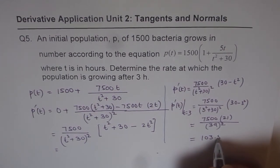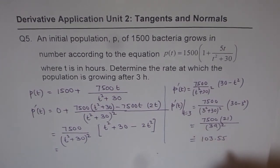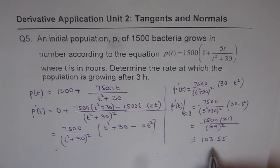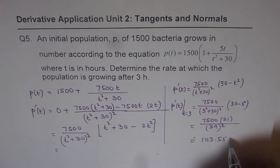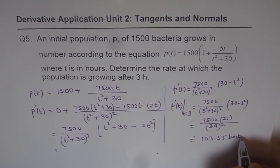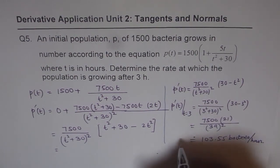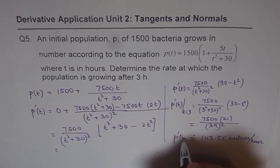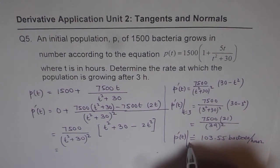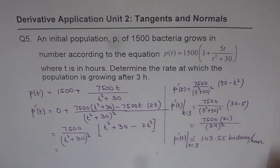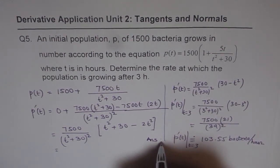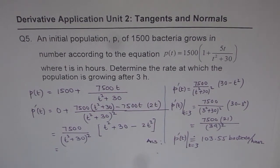So you get 103.55 approximately. So the rate of change at this stage is 103.55, and the units are bacteria per hour. So write bacteria per hour. So that is our answer. The P dash t at t equals to 3 is this. So that is the answer. So that is how you can do these kinds of questions. Thank you and all the best.